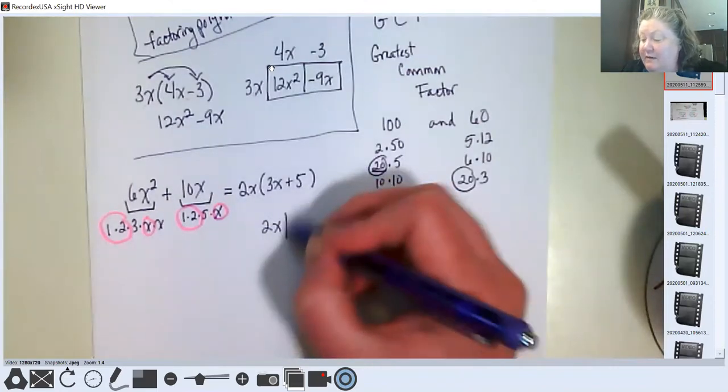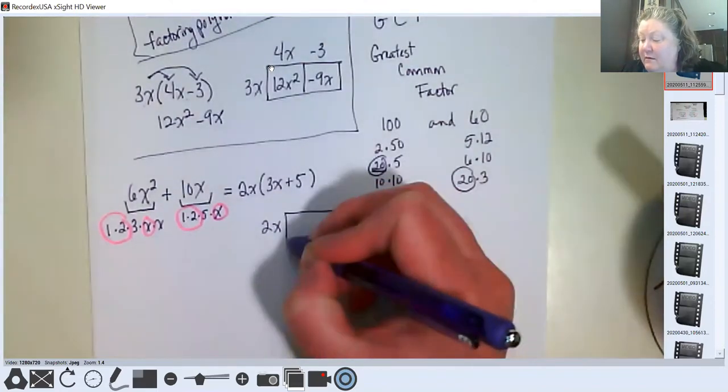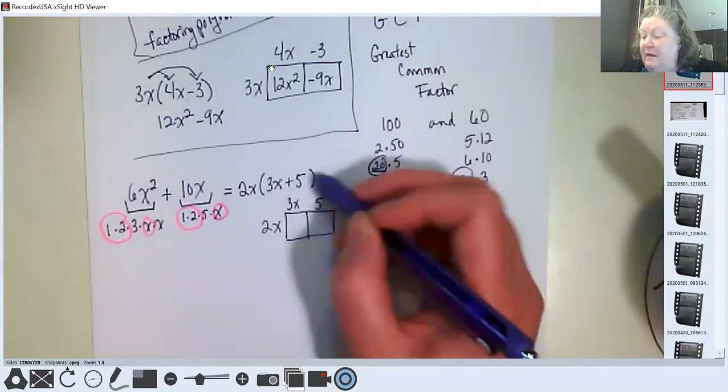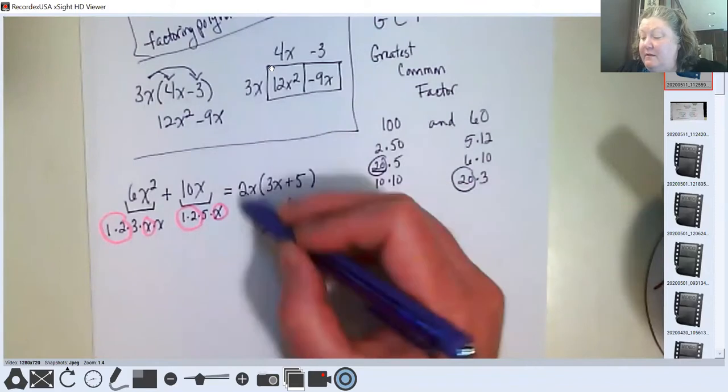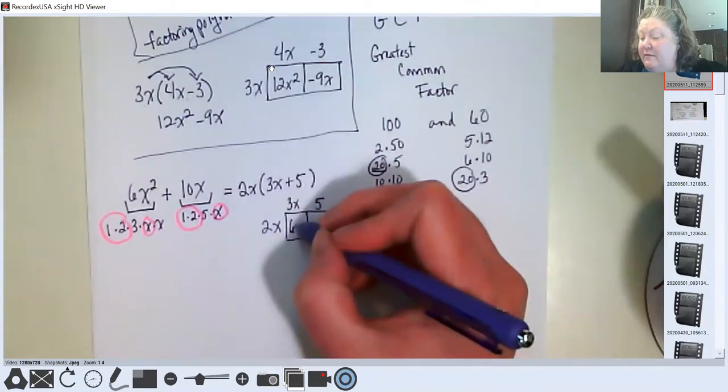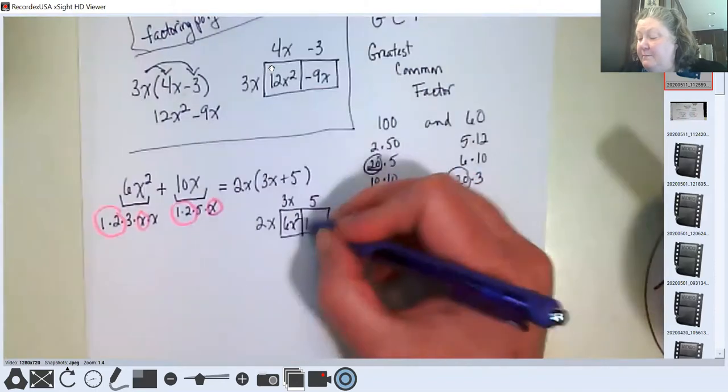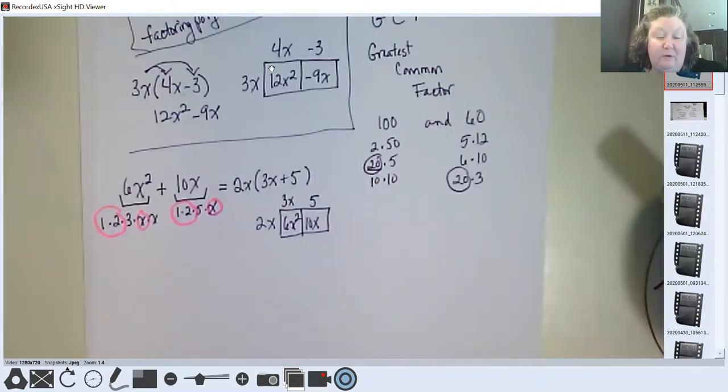I can check that by doing the box method and putting all the pieces of my undistributed in the box to see if I come back to the same terms from the very beginning. And that shows that it worked.